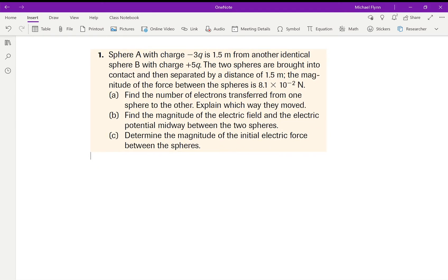All right, so look at this. Sphere A with charge of negative 3q—it doesn't tell us what q is, just negative 3q, so q is an amount of charge we don't know—is placed 1.5 meters from an identical sphere, another identical sphere with charge positive 5q.